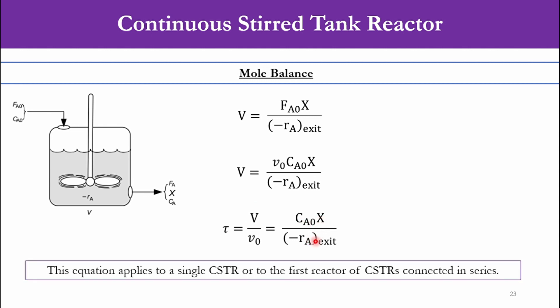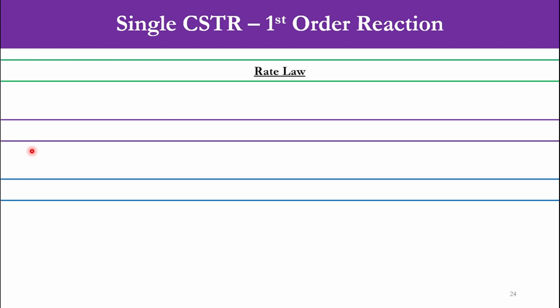This equation applies to a single CSTR or the first reactor of CSTRs connected in series. The expression tau equals CA0·X over (−RA) at exit will always apply to a single reactor, or to the first reactor if there are multiple reactors in series. For the second reactor it will depend on terms from the first reactor, but we will discuss that in detail when we reach that topic.